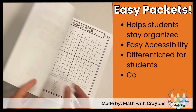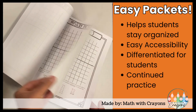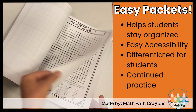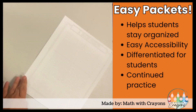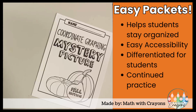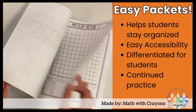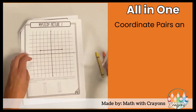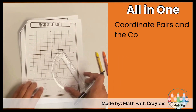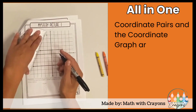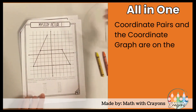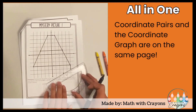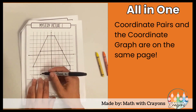All the mystery pictures come in a first quadrant and fourth quadrant graph, which makes it easy to differentiate and your students are able to have continued practice. Because the coordinate pairs are on the same page as the graph, it makes it easy for students to keep track of the coordinate pairs that they have already plotted and connected.